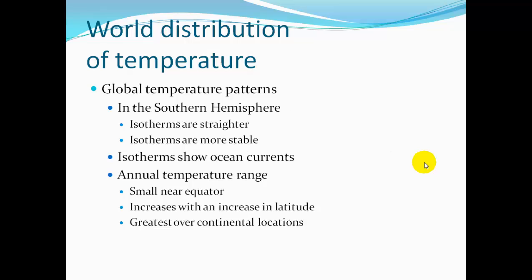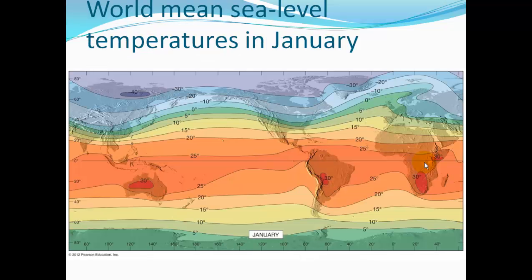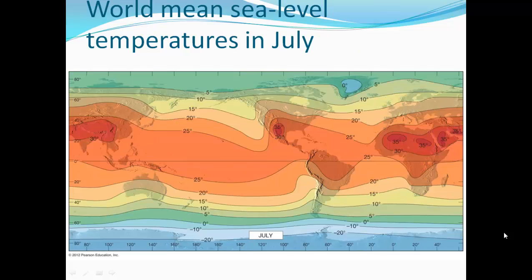The annual temperature range is smaller near the equator and increases with latitude. It is greatest over continental locations, since continents heat more and cool more than water. Looking at world mean sea level temperatures in January, the very cold regions are in the north, which is cooler than the southern hemisphere. The zero-degree isotherm shifts: in July it moves south because winter is now in the southern hemisphere and the northern hemisphere is in summer. Isotherms are much straighter in the southern hemisphere and vary much more in the northern hemisphere due to the influence of continents.